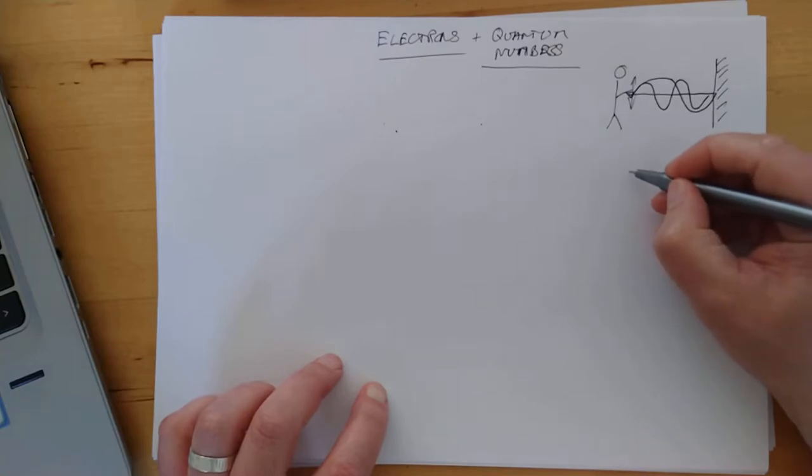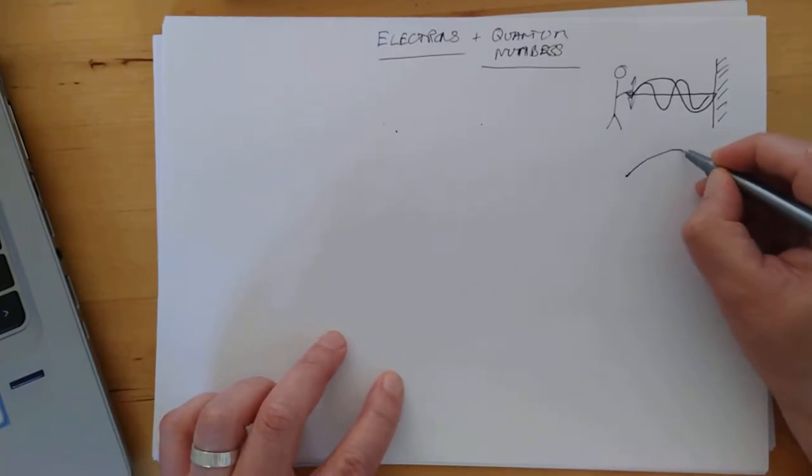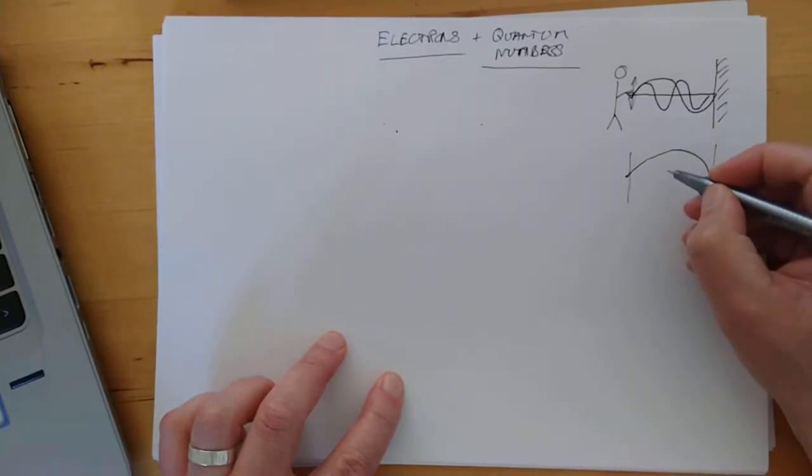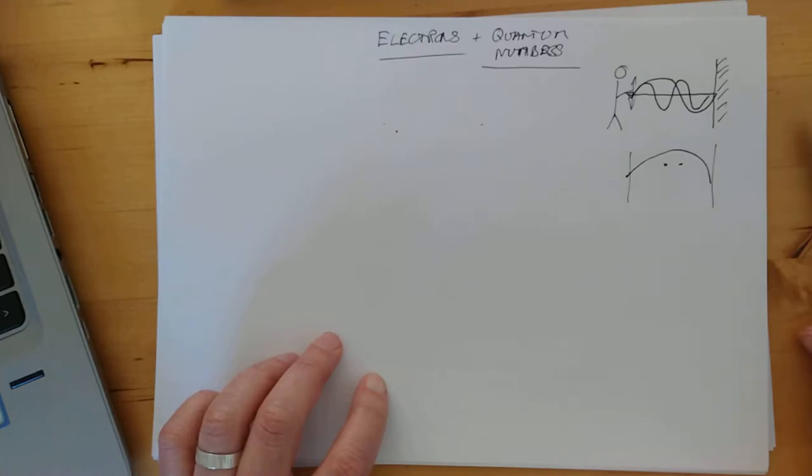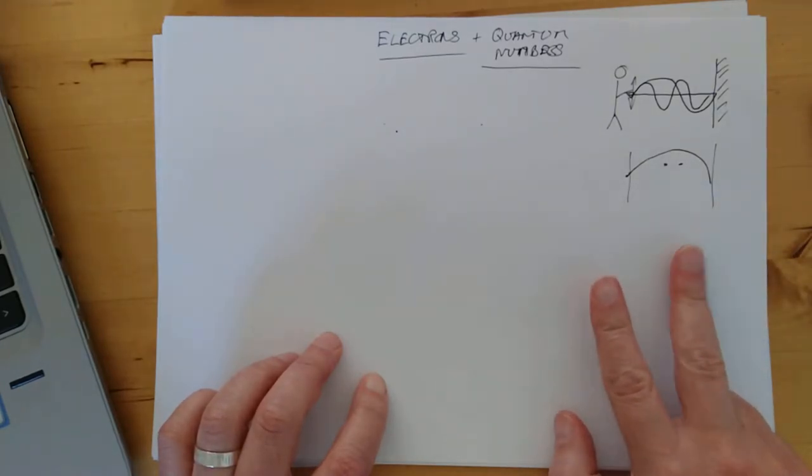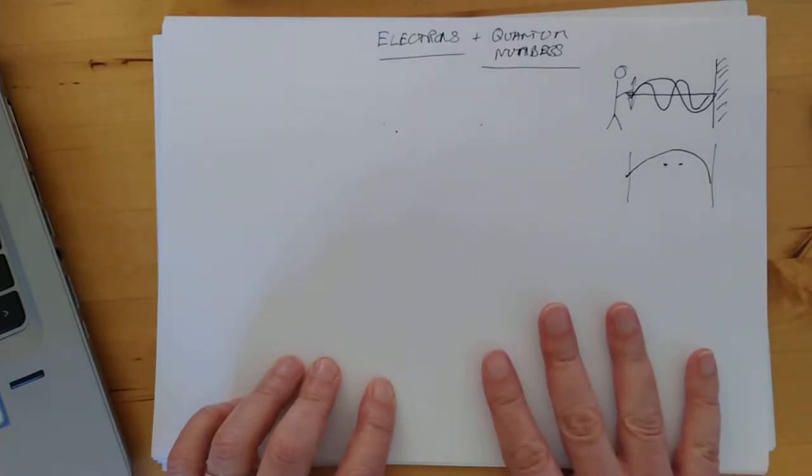There are different sizes and shapes of these standing waves and we call these standing waves orbitals. Each orbital can hold a maximum of two electrons. The different shapes and types of orbitals are governed by four numbers. These are our quantum numbers.